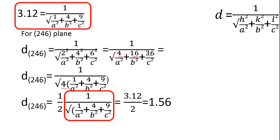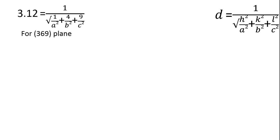Since this part is equivalent to 3.12, we can get d spacing by 3.12 divided by 2, which is 1.56. And again for (369) plane.